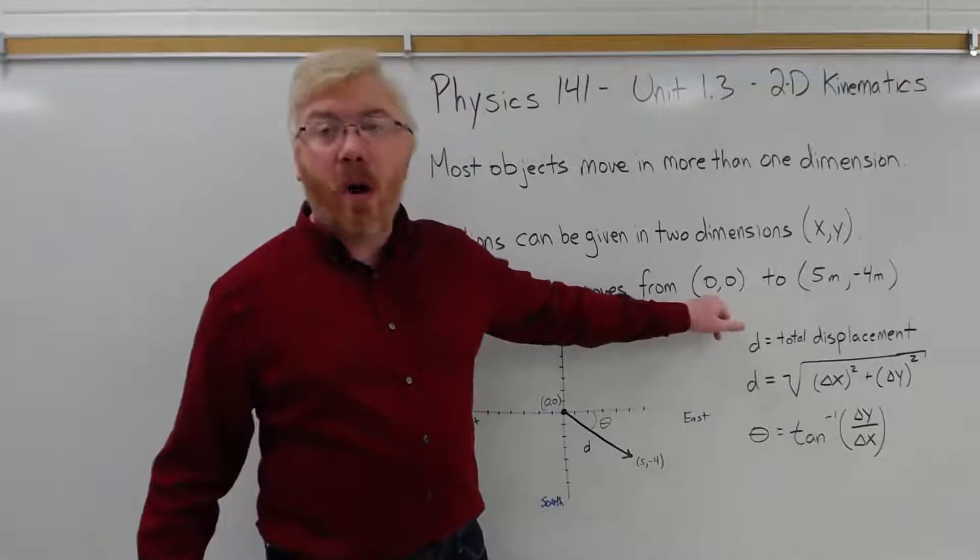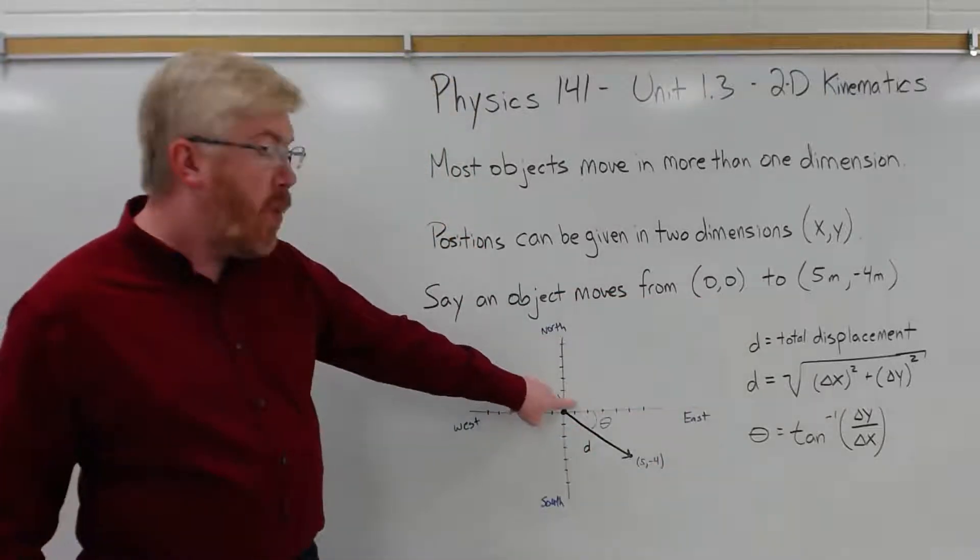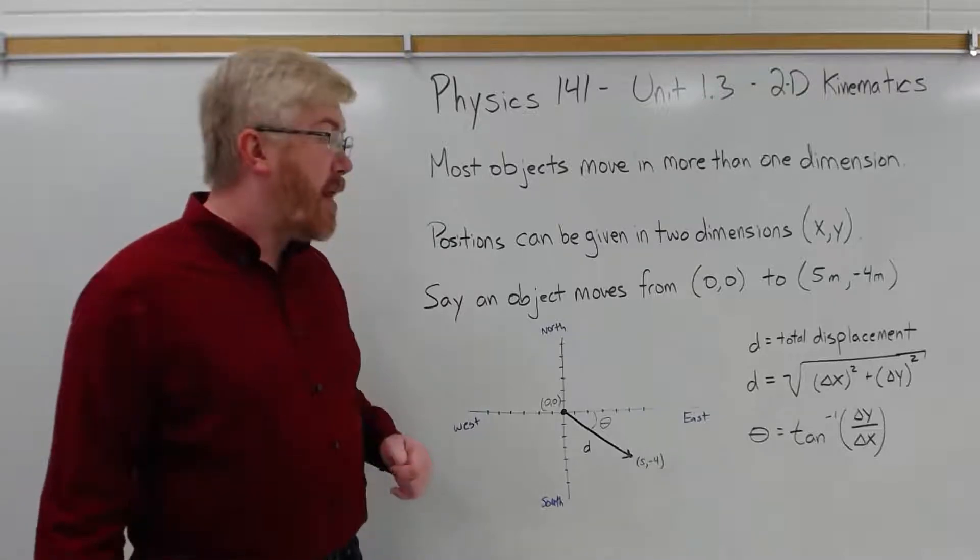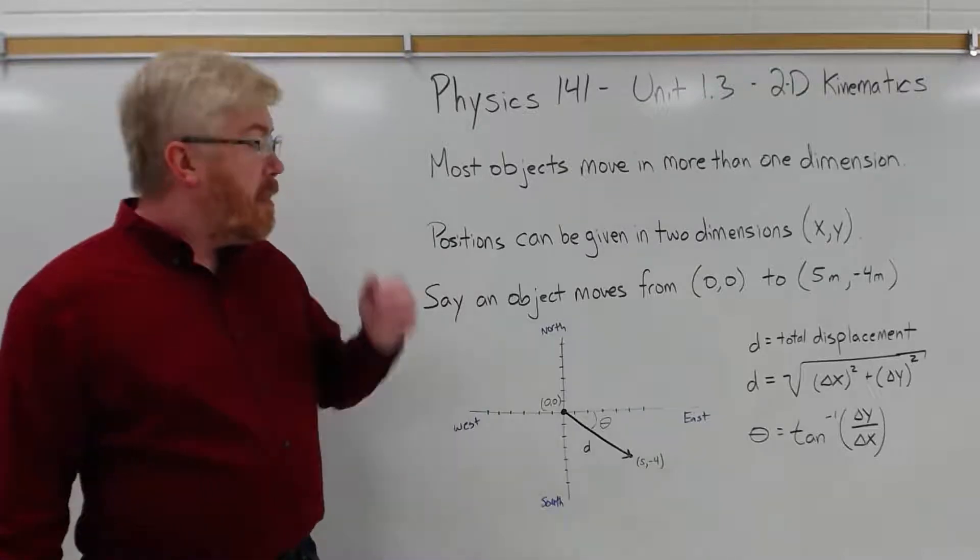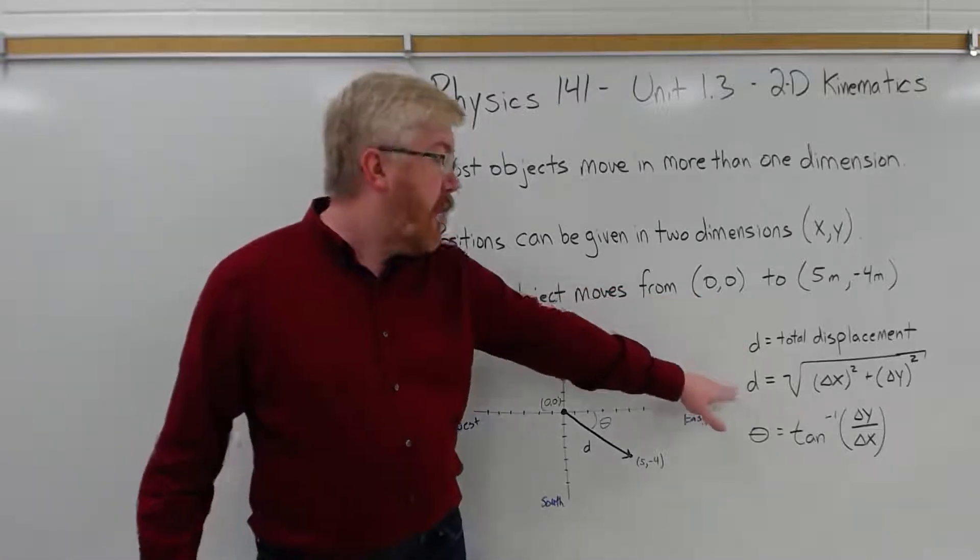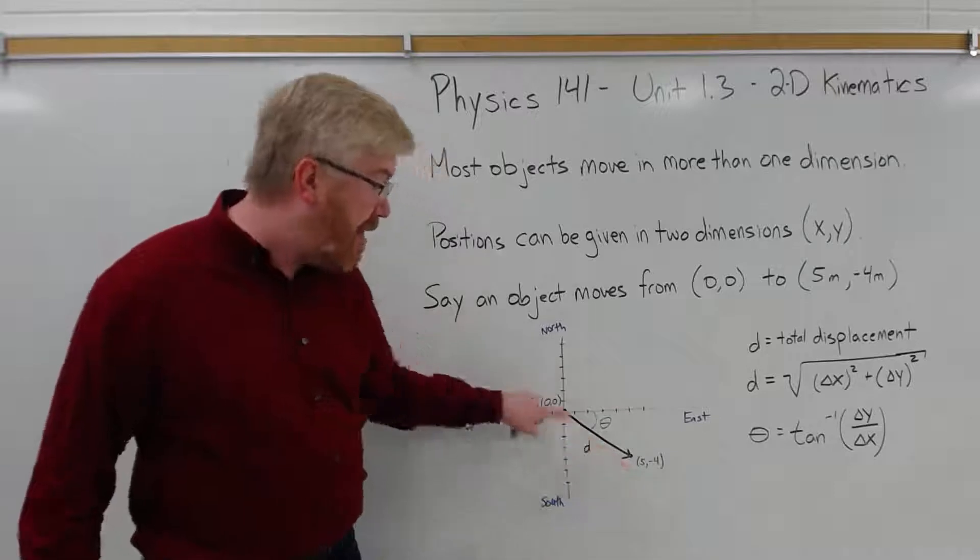If I started off at 1, 1, if I started off up here at 1, 1, you can see that d would be a different length, pointing in a different direction. So, to calculate the total displacement, the magnitude of the displacement, we need to find the length of this vector.